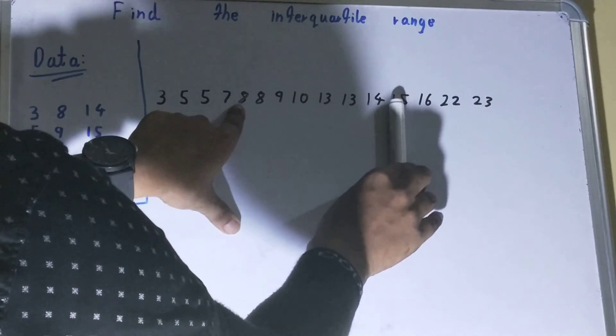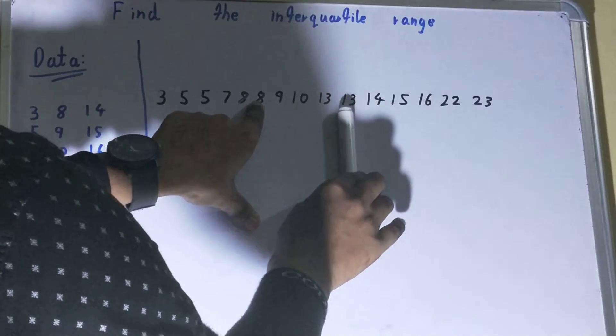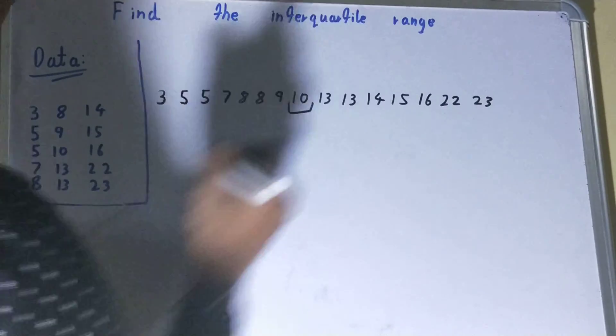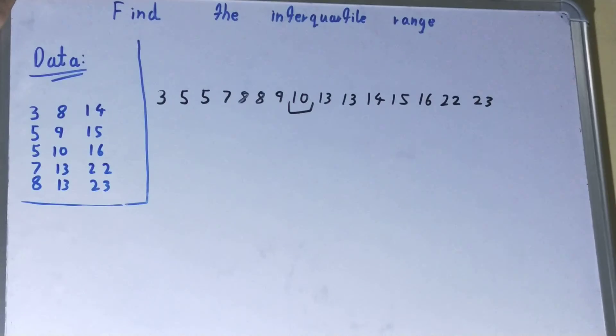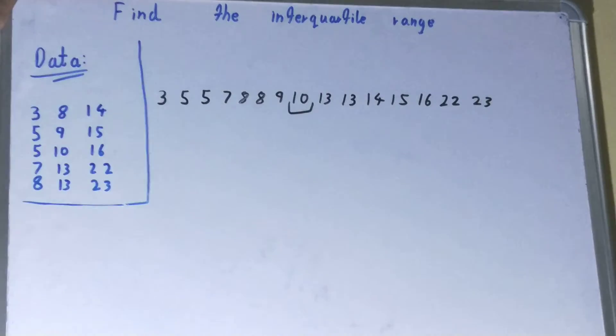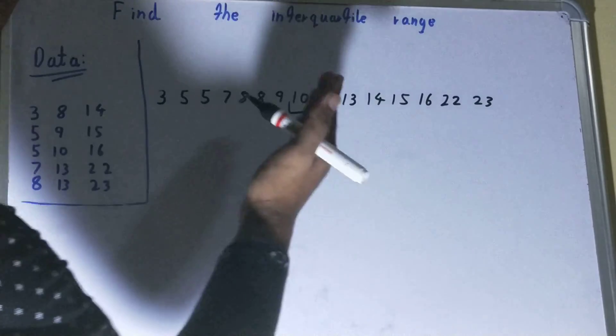The middle element in your data set. Our mean will be 10, and you will divide the data set from here. You will not include this 10, but if the number was even then you would have included this 10 also.